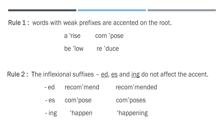The second rule is that inflectional suffixes like -ed, -es, and -ing do not affect the accent. Inflectional refers to the way in which the sound of your voice changes during speech. For example: recommend → recommended; compose → composes; happen → happening. Notice that the stress placement does not change.